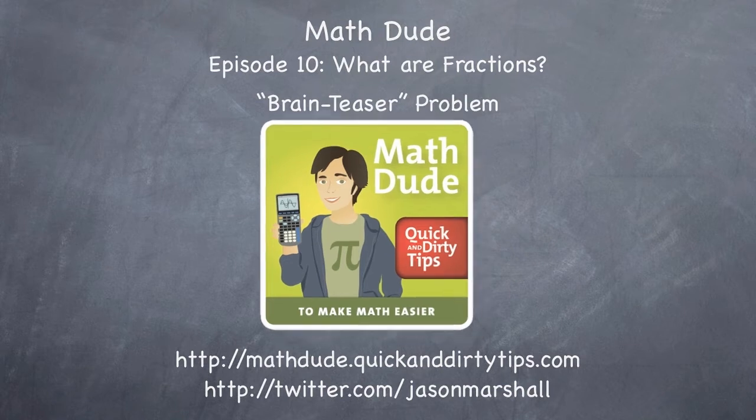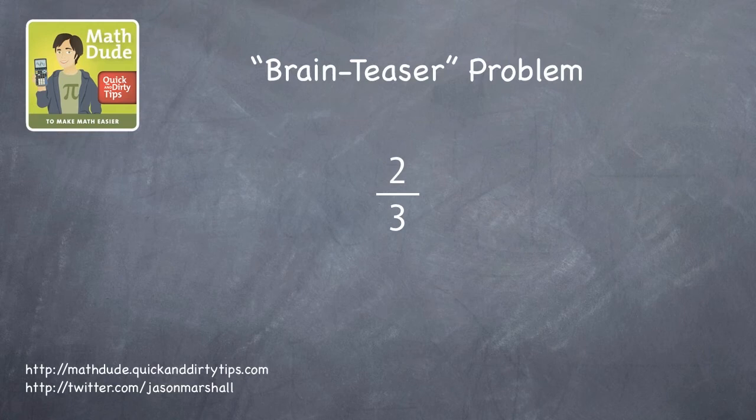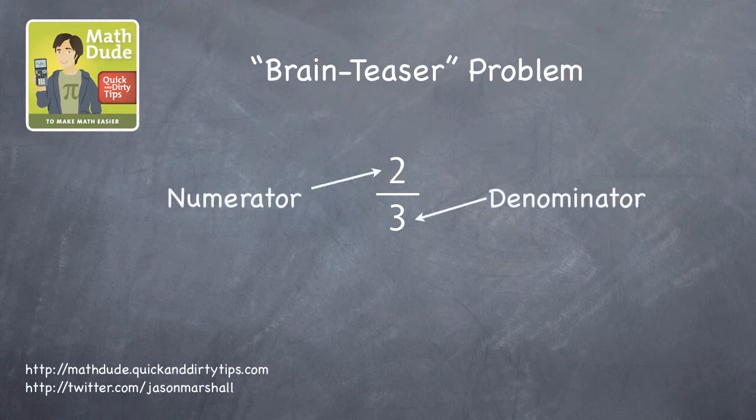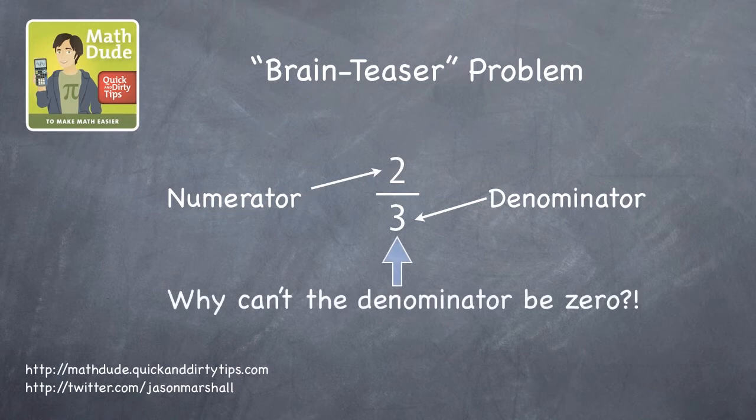In that episode, we started talking about fractions. In particular, we talked about the relationship between integers and fractions, and a bit about their numerator and denominator anatomy. At the end of the episode, I posed the question, why can't the denominator of a fraction be zero?